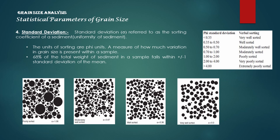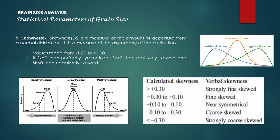Standard deviation is referred to as the sorting coefficient of a sediment, expressed in phi units. It is a measure of how much variation in grain size is present within a sample. Skewness is a measure of the amount of departure from a normal distribution — it measures the asymmetry of the distribution. Values range from -1 to +1. If skewness equals 0, the distribution is perfectly symmetrical. If skewness is greater than 0, it is positively skewed. If skewness is less than 0, it is negatively skewed.